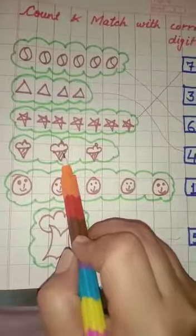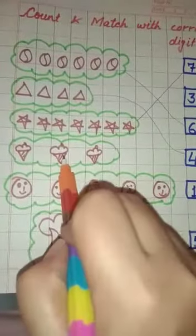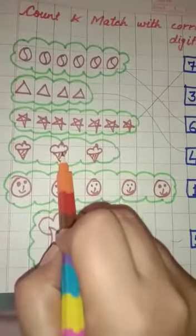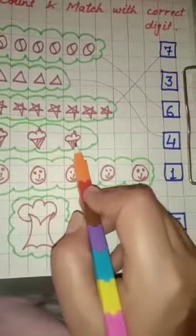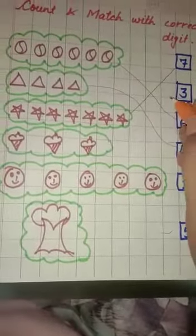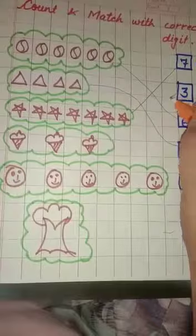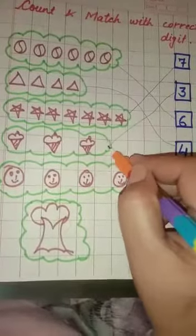Now tell me, what is this? Ice cream. Okay, count the ice creams with me. One, two, three. Now look here. Where is three? Here it is. Now match it with the digit three. This way you have to do it.